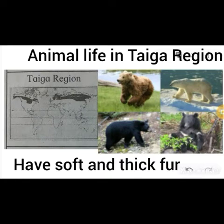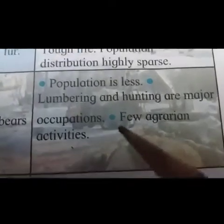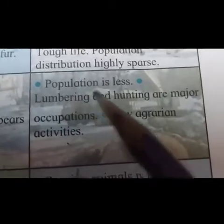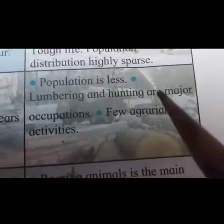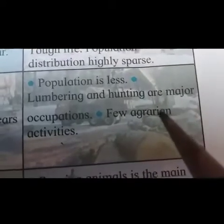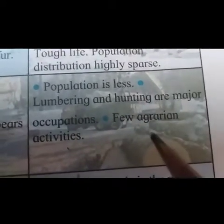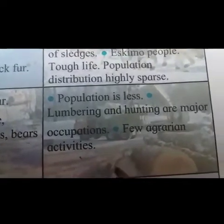These animals have soft and thick fur. In the taiga region, the population is sparse. Logging and hunting are major occupations, and few agrarian activities are seen.